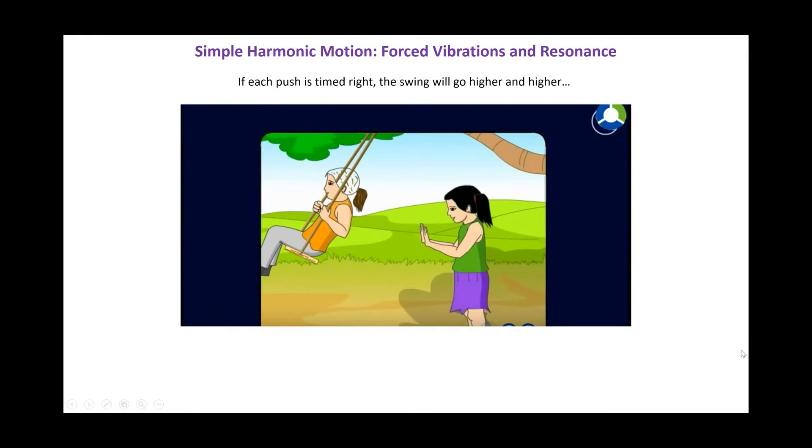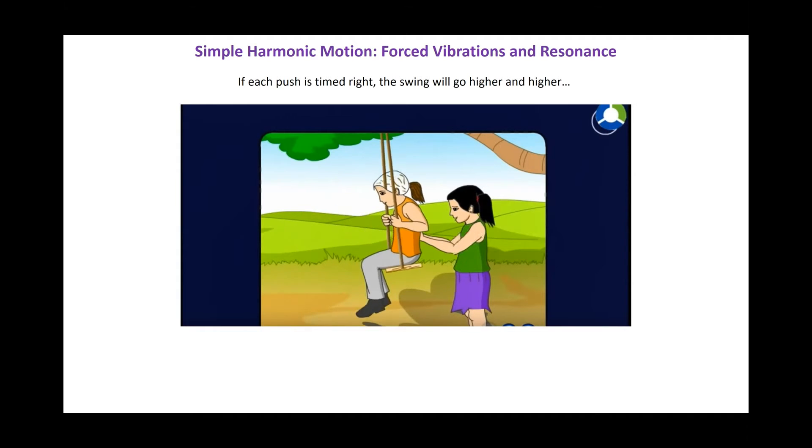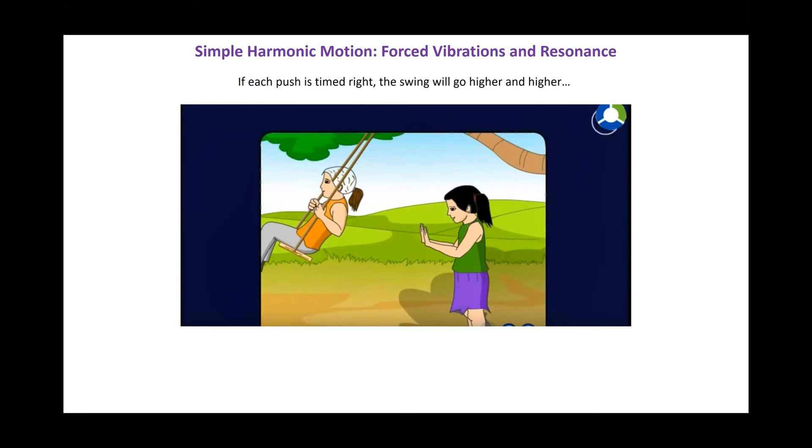In this video, we're going to have a look at forced vibrations and resonance in simple harmonic systems. If you've got someone on a swing, you can force them to go higher and higher by pushing them. You can apply an external force to make them oscillate in a way they wouldn't naturally. In this scenario, the person doing the pushing is called the driver. That's just the thing that provides the periodic force that forces a vibration. A forced vibration is when you apply a periodic force to an oscillating system.